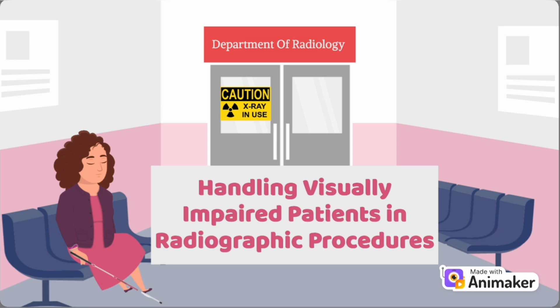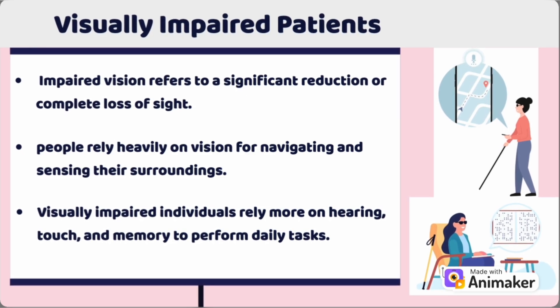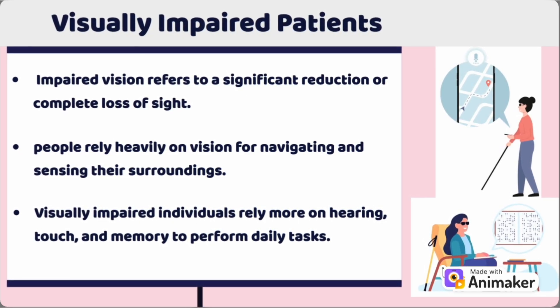Let's begin by understanding what visual impairment means. Visual impairment refers to a significant reduction or complete loss of sight. People rely heavily on vision for navigating and sensing their surroundings, but visually impaired individuals must rely more on their other senses, like hearing, touch, and memory, to navigate and perform daily tasks.